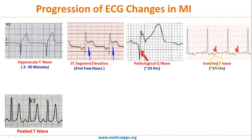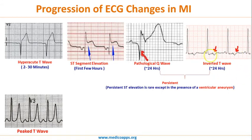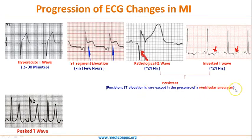Finally, T wave inversion also happens around 24 hours after the event. It is important to realize that pathological Q wave and inverted T wave may be persistent features — they may persist even after the acute MI is over. However, persistent ST elevation is rare, except in the presence of ventricular aneurysm. So, persistent ST elevation on ECG should point towards a diagnosis of ventricular aneurysm.